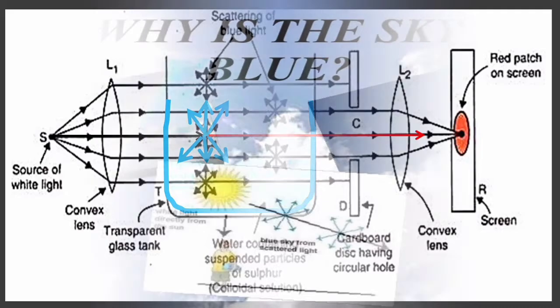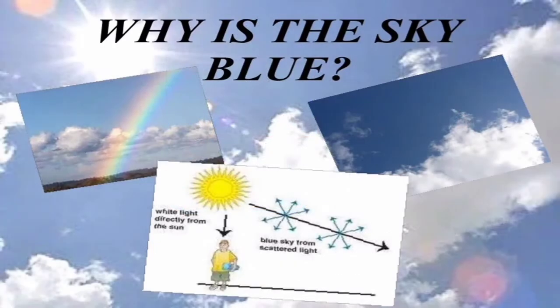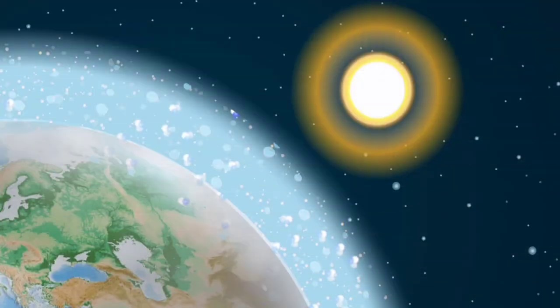Now let's understand why the color of clear sky is blue. The air molecules and other fine particles in the atmosphere have size smaller than the wavelength of the visible light.